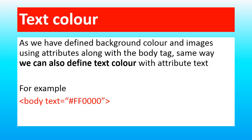For defining the background color we used to write in the body tag an attribute called bgcolor equal to the value — that is the name of any color or hexadecimal of any color. Same way, to define the text color we have to write body text equal to the name of the color we want to use in double quotes.